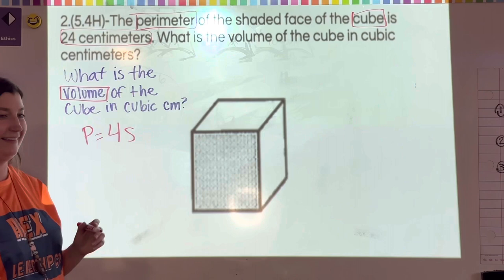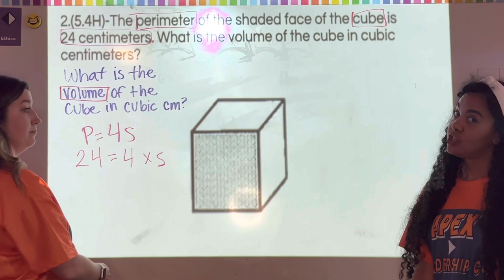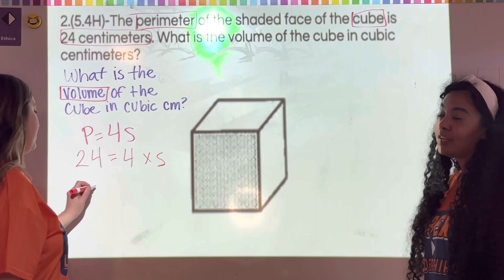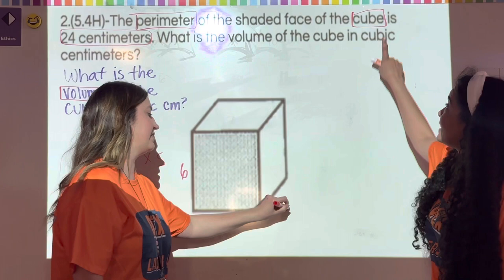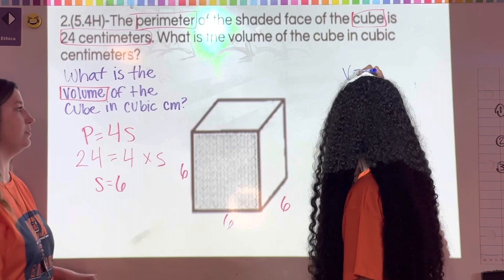Anytime I have a number and a variable with nothing in between, I do multiplication. So 24 = 4 times s. That means one side equals six, because 4 times 6 equals 24. Since it's a cube, every single side is six.